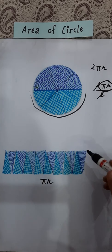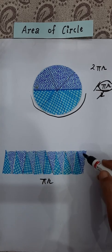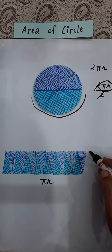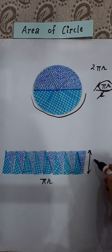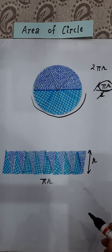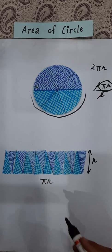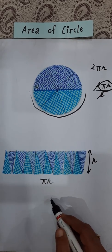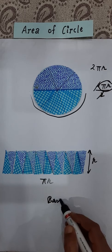Then, if we talk about the height of this, the height of this is equal to the radius. Height of this sector is equal to radius. And since it is forming a parallelogram, and you know that area of parallelogram is base into height.